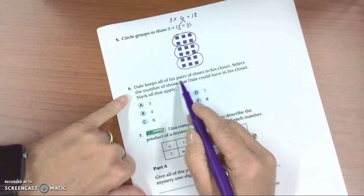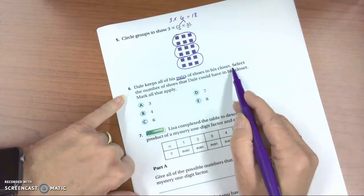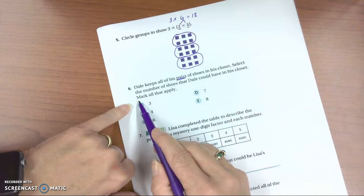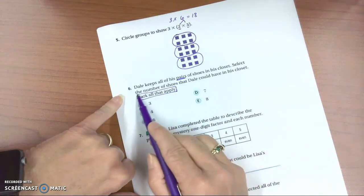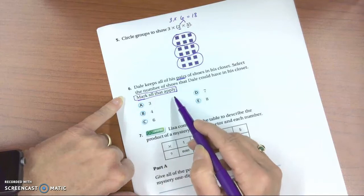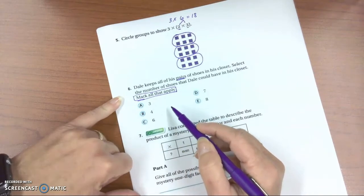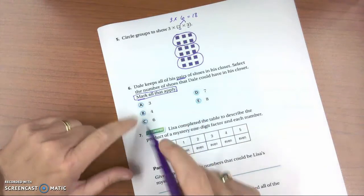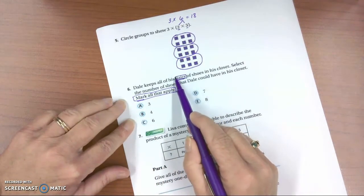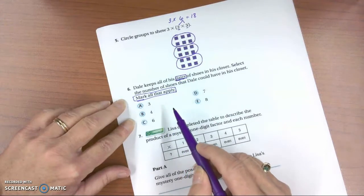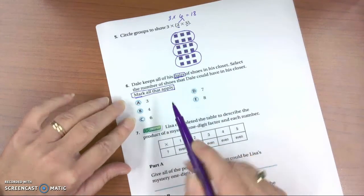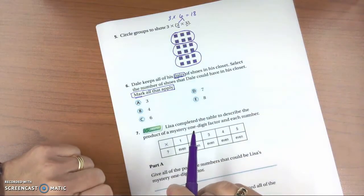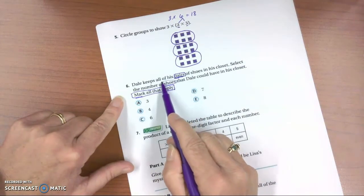Dale keeps all of his pairs of shoes in his closet. Select the number of shoes that Dale could have in his closet. Mark all that apply. So that tells me there's going to be at least 2 correct answers, but there could be more. They're all in the closet. So how many shoes could he have? And notice it says how many shoes.